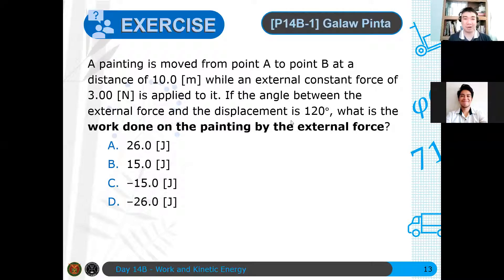Now, let's have an example, just a recall of what we did last time. A painting is moved from point A to point B at a distance of 10 meters, while an external constant force of three newtons is applied. If the angle between the external force and the displacement is 120 degrees, what is the work done on the painting by the external force?